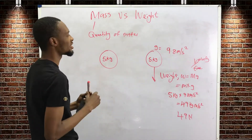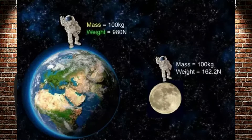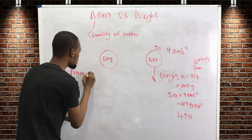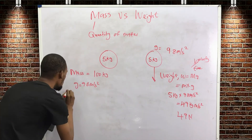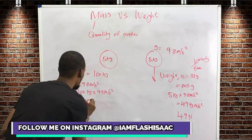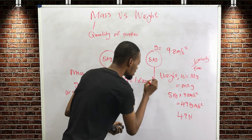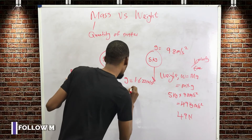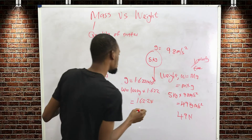Mass is the same everywhere. Take a look at this picture of an astronaut on Earth and on the Moon. The mass of the astronaut is 100 kg — it is constant, it doesn't change. On Earth where g = 9.8 m/s², the weight is 100 kg × 9.8 = 980 N. On the Moon where g = 1.622 m/s², the weight is 100 kg × 1.622 = 162.2 N.